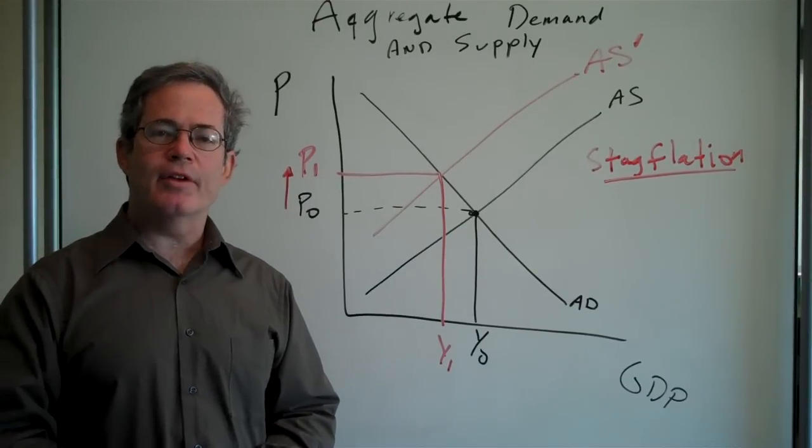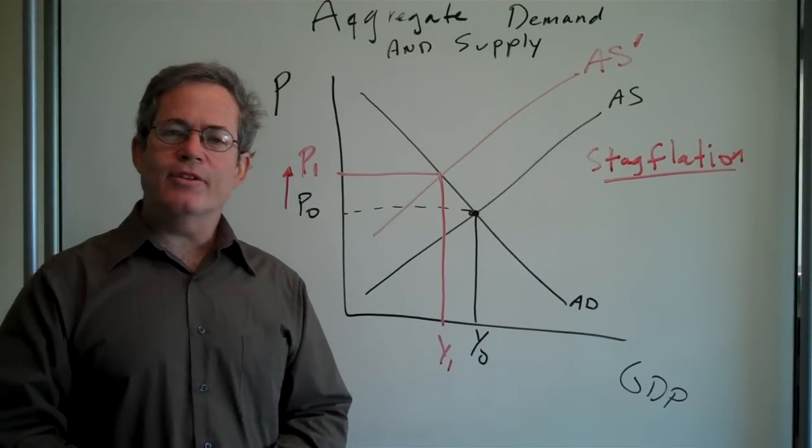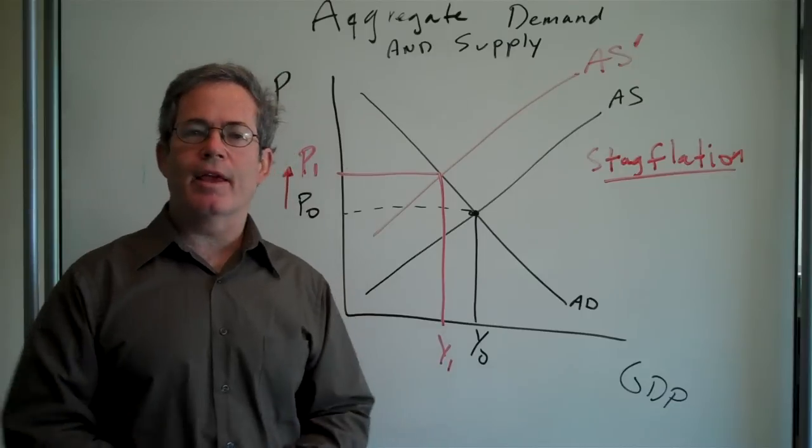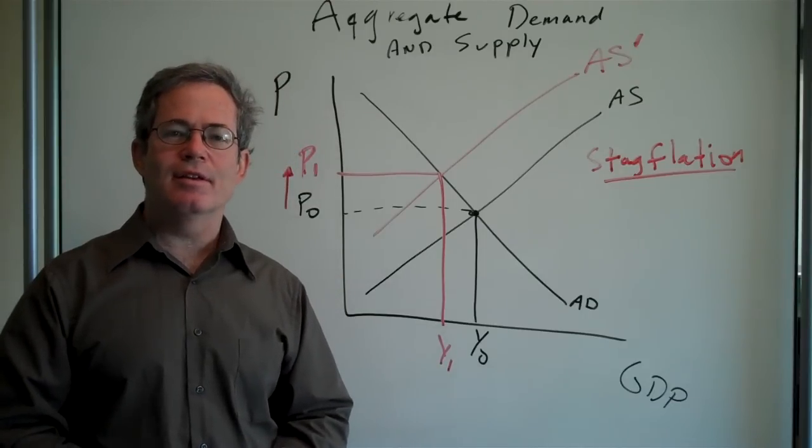Last time we introduced the idea of stagflation. What happens if prices in the economy go up dramatically, like in the oil price shocks of the 1970s?